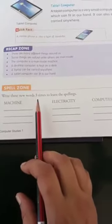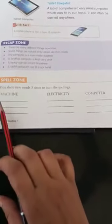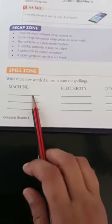Write these new words three times to learn the spellings. Machine. You will have to write here three times.